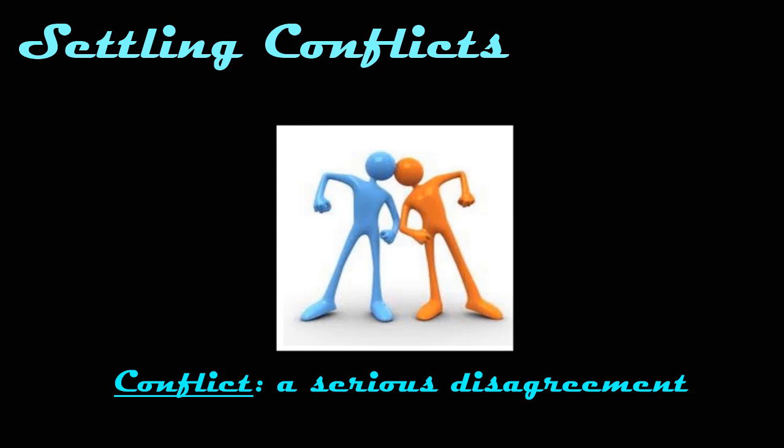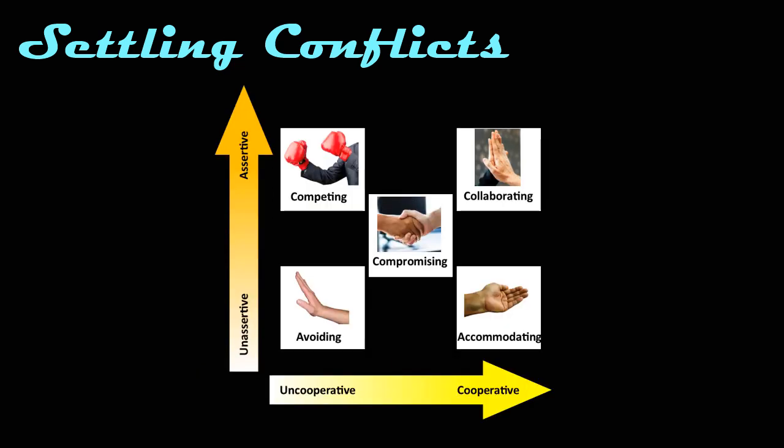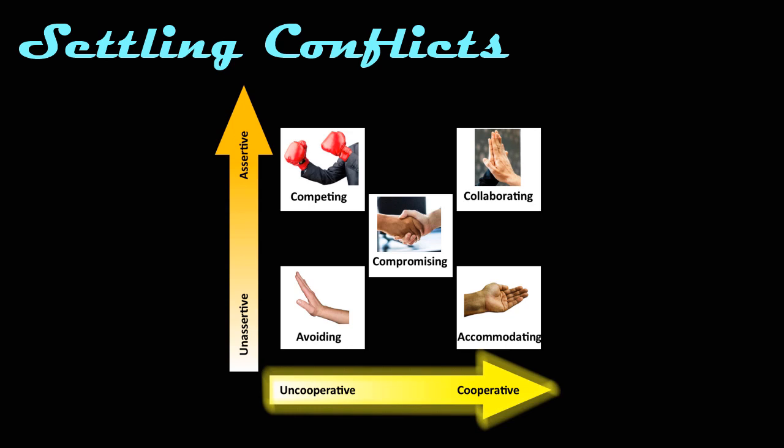Conflict is defined as a serious disagreement or argument which arises due to opposing desires or needs, or as a result of differing opinions, values, or interests that seem incompatible. In the last lesson, we discussed the five basic conflict management strategies. These five strategies lie on a continuum that varies in the level of assertiveness and cooperation. Each of these strategies can be useful depending on the scenario and the details of the conflict.